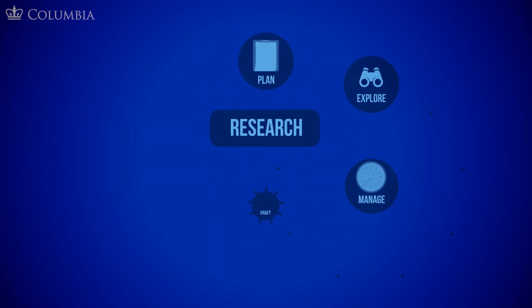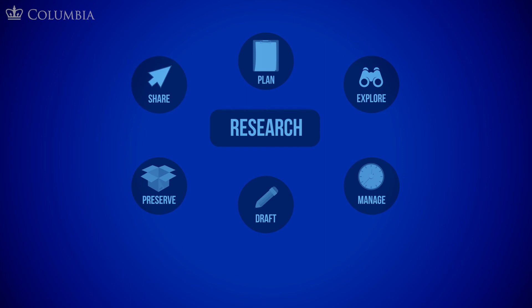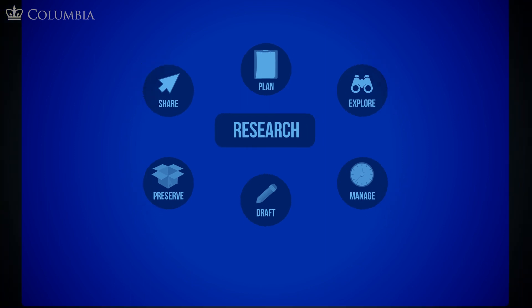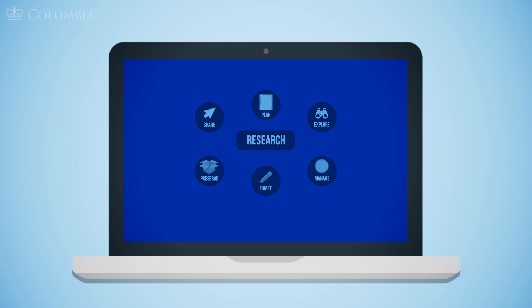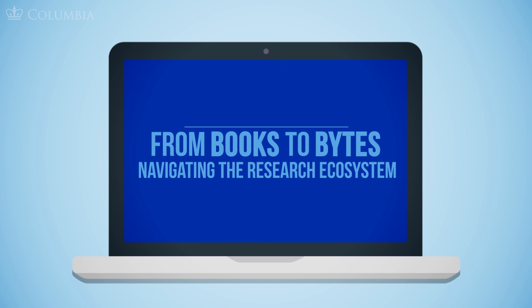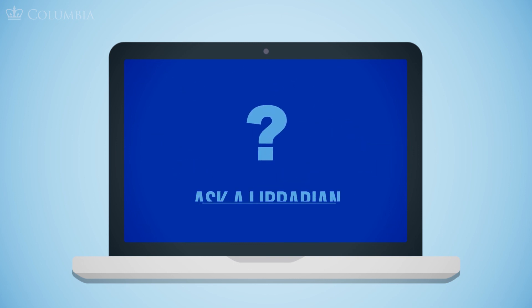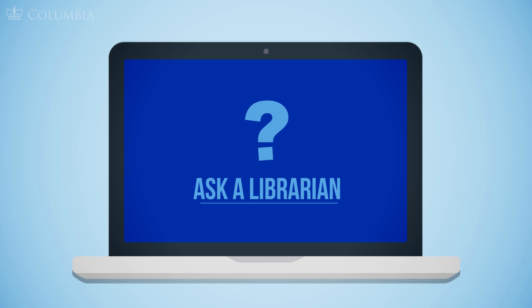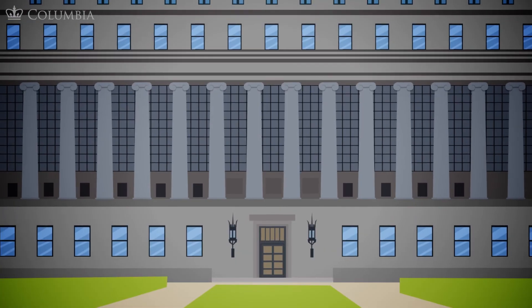We hope this video has offered some insight into the research cycle and how best to develop a research strategy. We encourage you to familiarize yourself with the other videos and resources in the From Books to Bytes series, as they all delve deeper into the resources available to you at the Columbia University Libraries. And remember, you can always consult with your subject librarian and visit our Ask a Librarian service on the Columbia Libraries website.